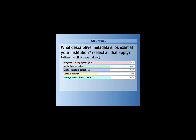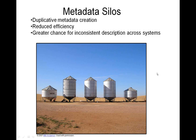It looks like the majority of you have metadata in your ILS — well, that's to be expected — followed by an institutional repository and archival collections. But a lot of you, 67%, also have homegrown or other systems on campus that contain metadata. The point of this poll is to highlight the challenge for many of us: bridging these silo walls to further the reach of our metadata for use and reuse. The rest of this presentation will focus on how to bridge those silo walls.